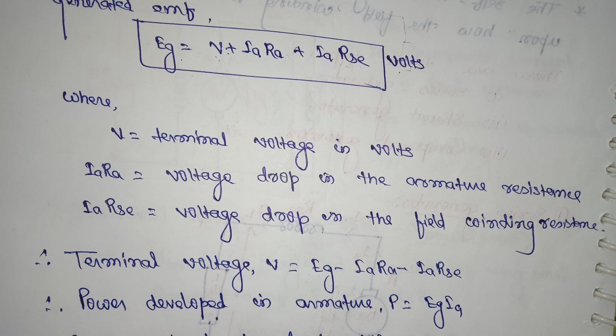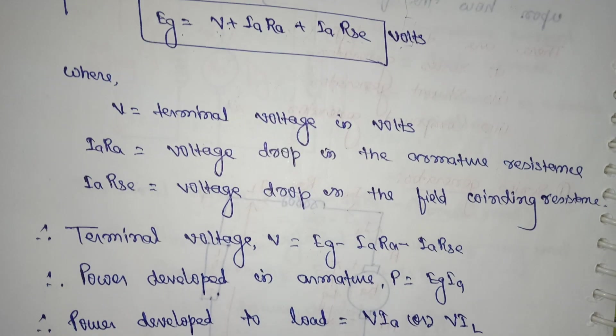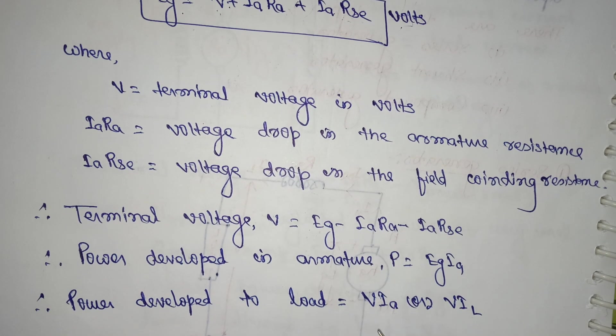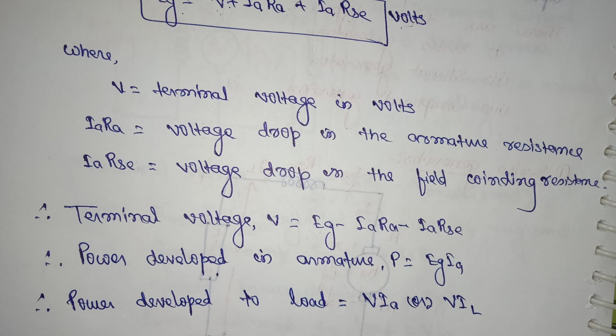Next, power developed in the armature: P = Eg × Ia. Power delivered to the load is equal to V × Ia or V × IL, because Ia and IL both are same. That's why, for not creating any type of confusion, I've written both the formulas: V × Ia or V × IL. Thank you.